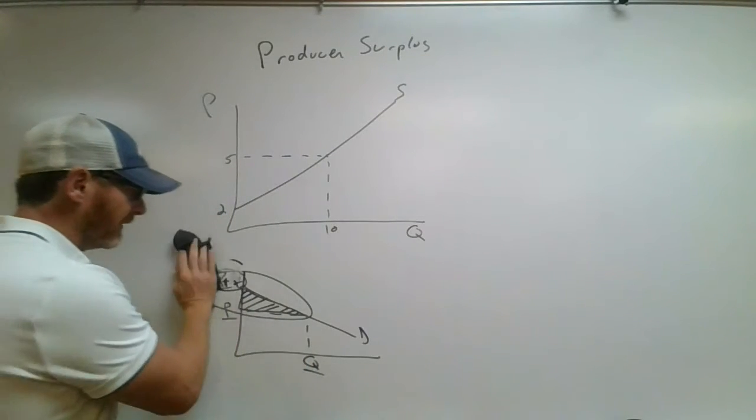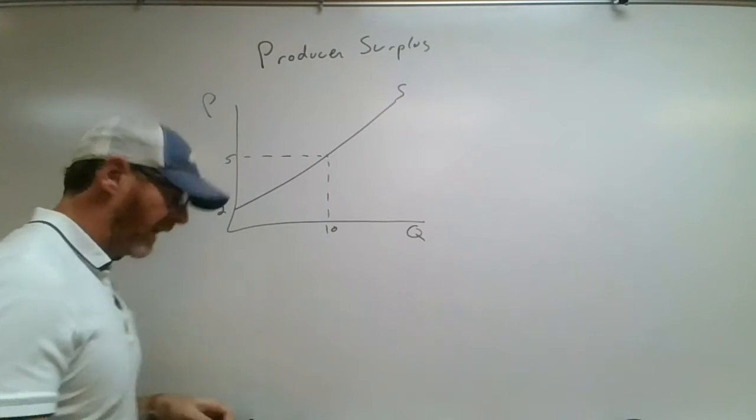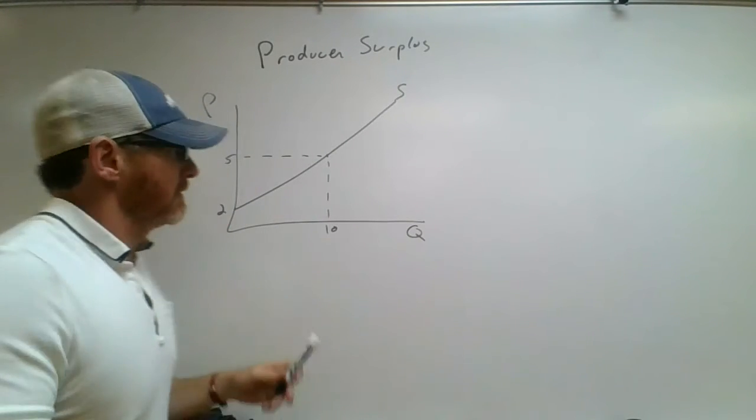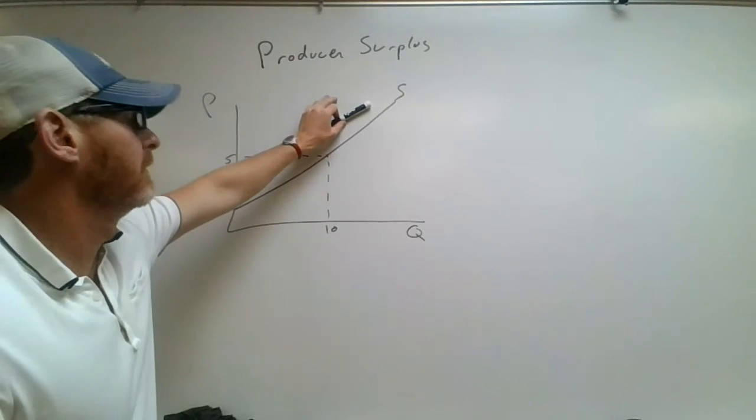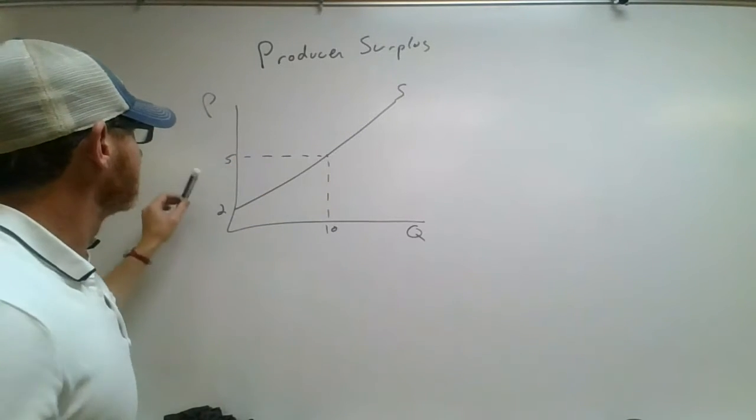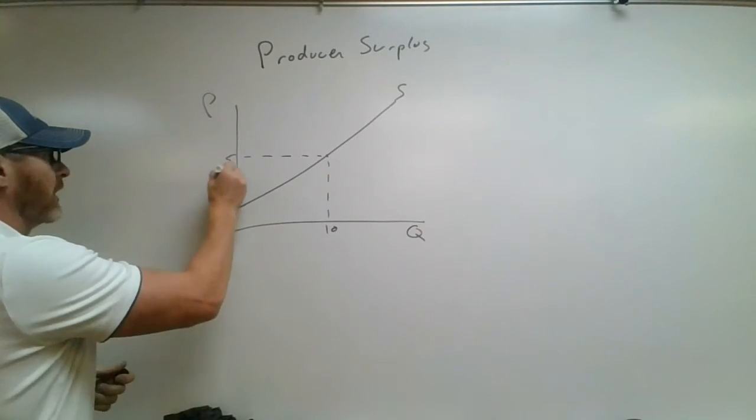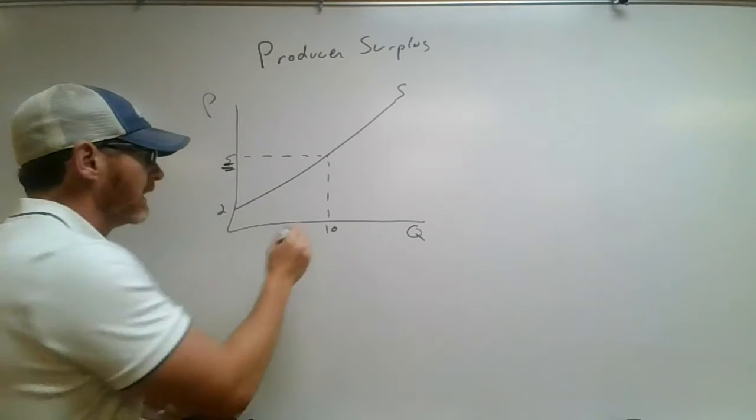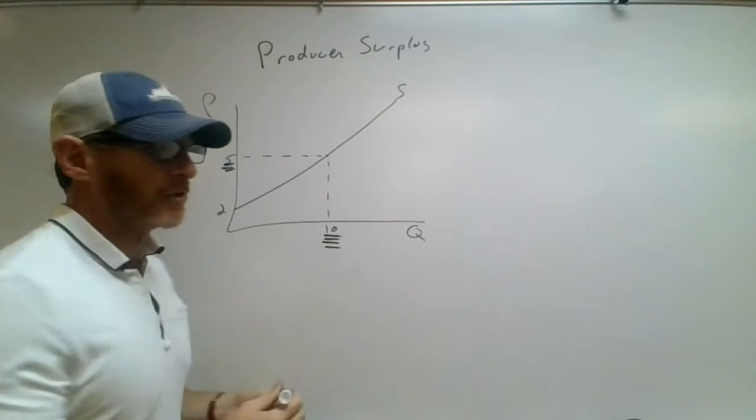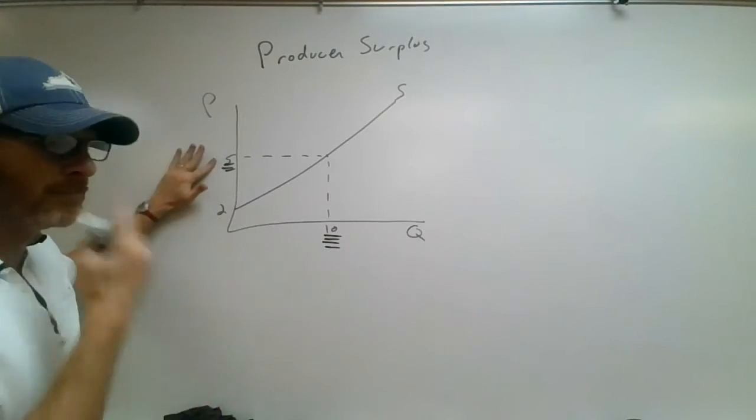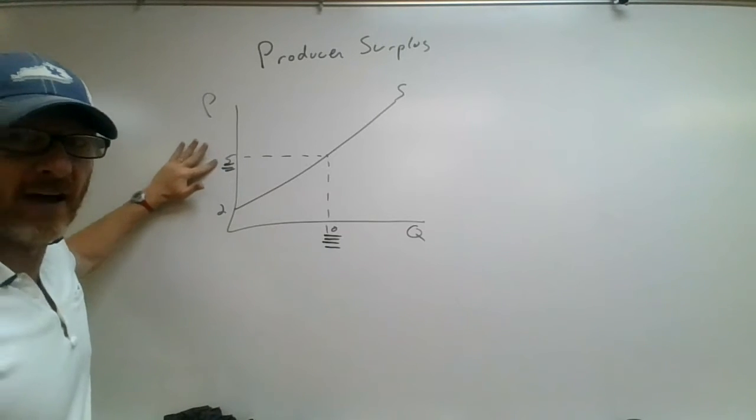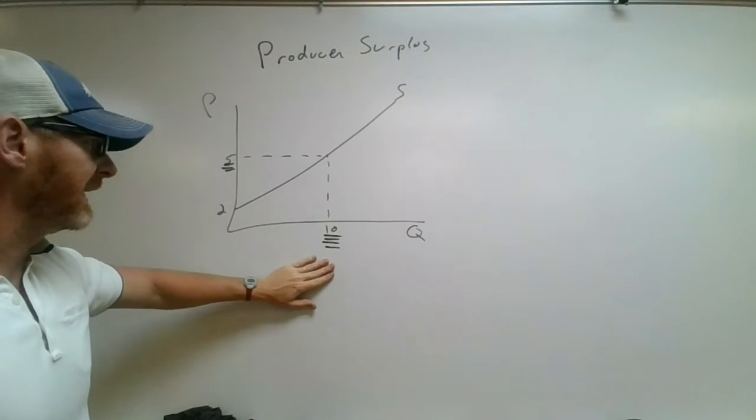The same thing also happens from the production side, from the firm side. So here is a supply curve. You know, our quantity, our price. Let's say our equilibrium price for this good is 5, and our equilibrium quantity is 10.